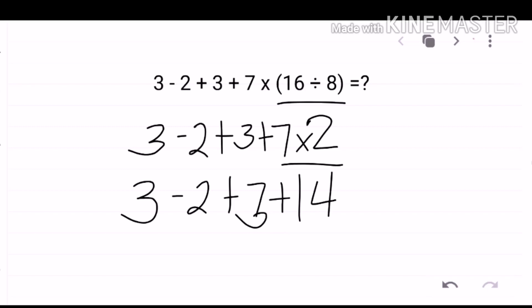Now, for the last part, since the only operations left here are subtraction and addition, let's decide which between the two we'll do first. Since subtraction comes first, we'll do subtraction first. So, we have 3 minus 2 is 1 plus 3 plus 14.